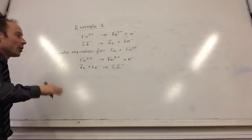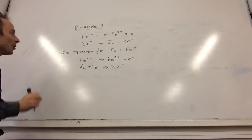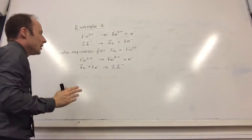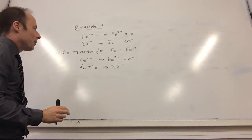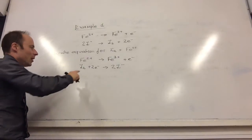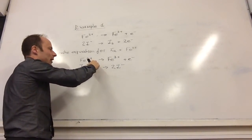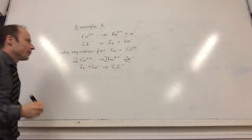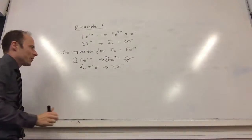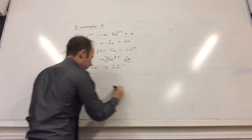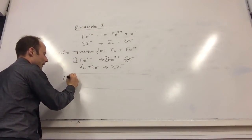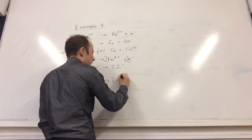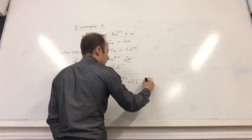If you don't swap them around, you can't cancel the electrons. So first thing: have I got my reactants on the right side? Fe2+ and I2+? Yes, those are my two reactants. The next step is to make sure that my electrons are the same on both equations. I've got two electrons there but only one electron there, so this equation has to be times by two. Now I've got two electrons in each equation, so I can add them together. That becomes 2Fe2+ plus I2 plus two electrons goes to 2Fe3+ plus 2I minus plus two electrons.